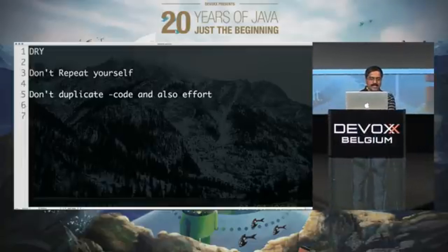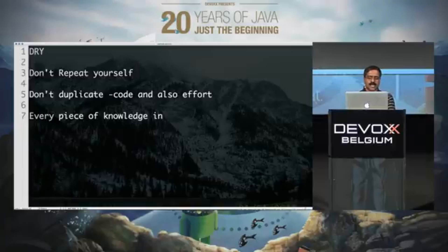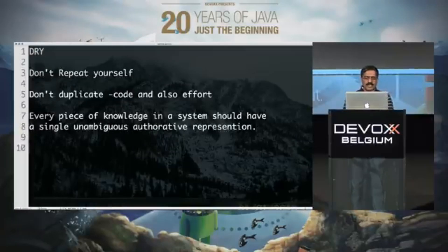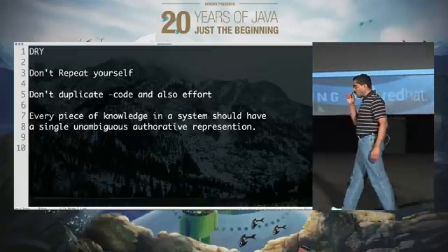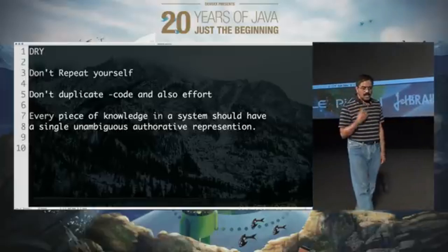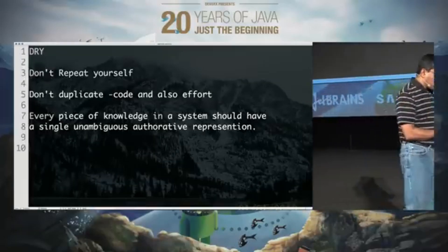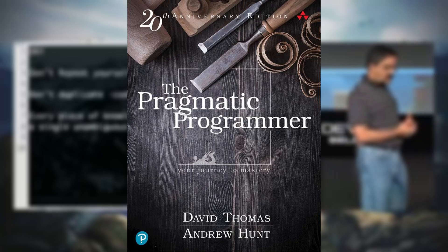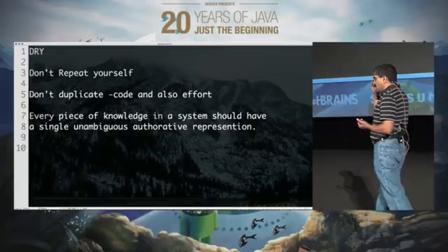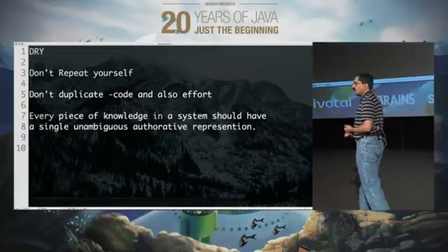So what does the DRY principle say? It says every piece of knowledge in a system should have a single, unambiguous, authoritative representation. We are knowledge workers, and every piece of knowledge in a system should have a single unambiguous authoritative representation. This was written in The Pragmatic Programmers — a fantastic book — and the Pragmatic Programmers say we should not duplicate effort and we should not duplicate code.